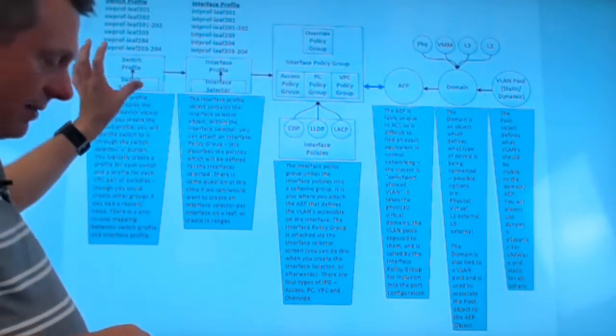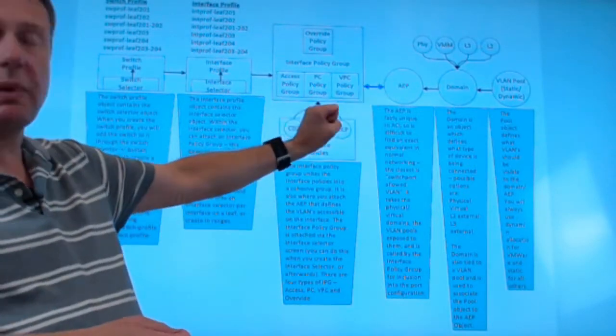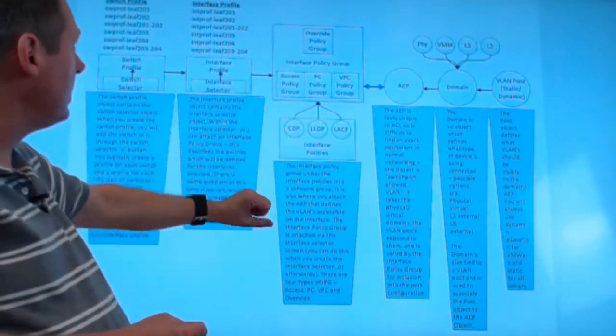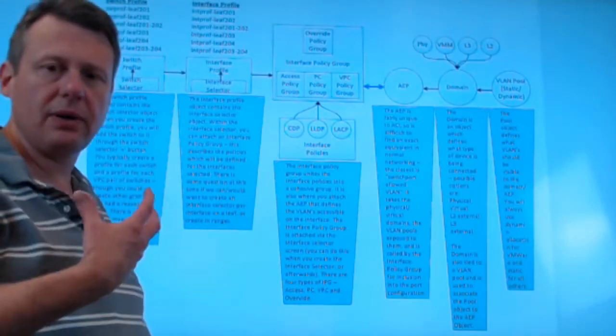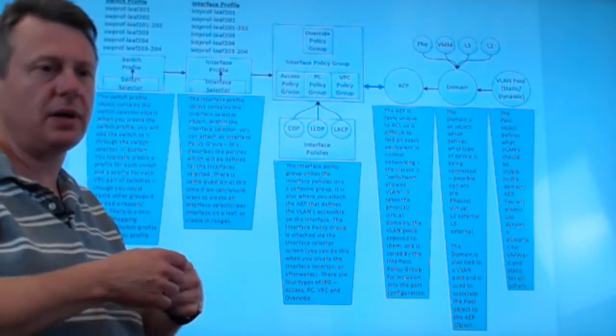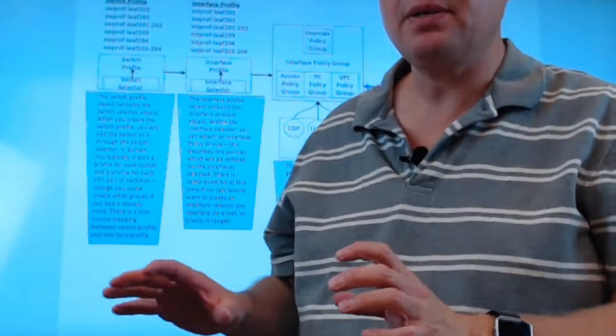So again, we have our selectors, our profiles over here, our pools, our domains, and our AEPs over there. All that kind of gets glued together in this policy group. And then that gets deployed down on actual interfaces on actual leaf switches. Hopefully this makes a little bit of sense to you.